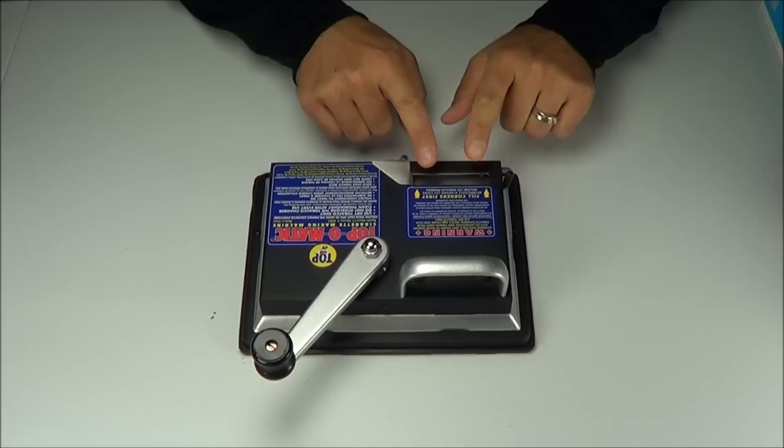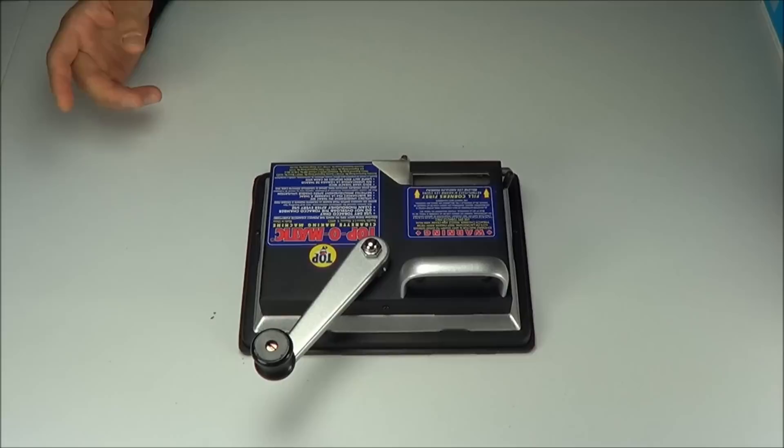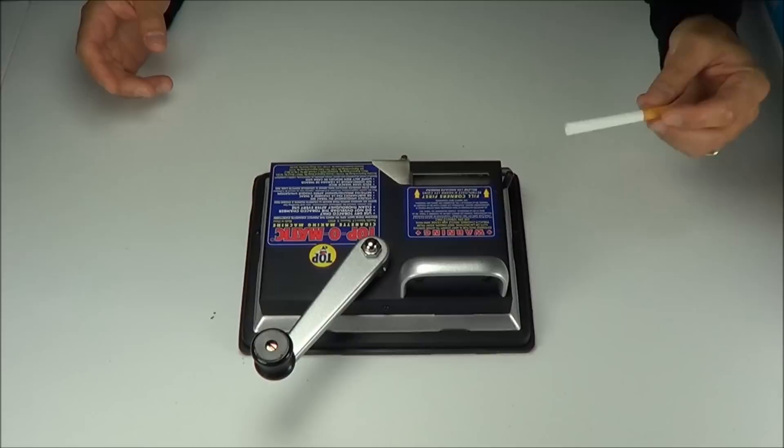You definitely want to keep your fingers away from here as there's a plate that comes down as you engage this lever. So the first thing you're going to do is we have it set up for kings right now. Get yourself a king size cigarette tube and put it on first.